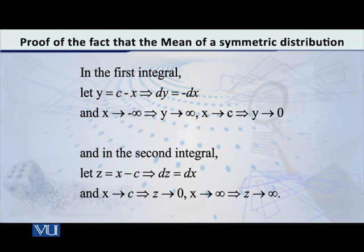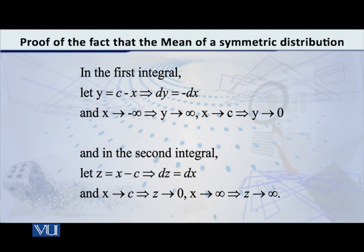Now let us apply the transformation to the second integral. Let z equal x minus c. Then dz/dx equals 1, meaning dz equals dx. For the change of limits: as x tends to c, z tends to 0; and as x tends to infinity, z also tends to infinity. So the second integral has limits from 0 to infinity.